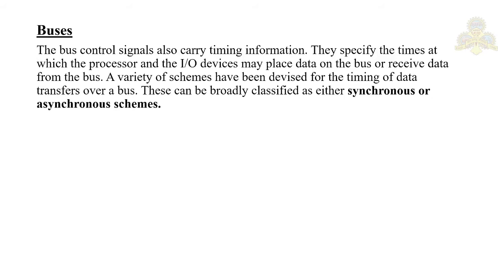The control line specifies whether a read or write operation has to be performed — that is R or W bar. When it is set to one, it is a read operation; when zero, it is a write. When several operand sizes are possible such as byte, word, or long word, the required size is indicated. Bus control signals also carry timing information — they specify when the processor and I/O device may place or retrieve data from the bus. These timing schemes are classified as synchronous or asynchronous.